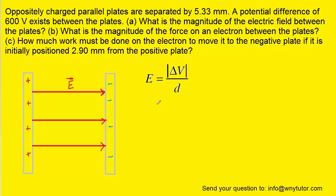To calculate the magnitude of that electric field between the plates, we can use the following equation: E = |ΔV|/d. This is always an equation you can use when you have parallel plates. We will simply plug in the ΔV, which is our potential difference of 600 volts, and then the distance between the plates, which is 5.33 millimeters.